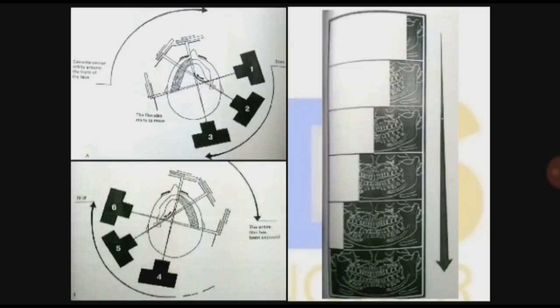The tube head comes to position 2, then position 3, then position 4, 5, and 6. In this way it is completing the entire rotation, and simultaneously the image is formed.